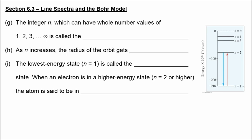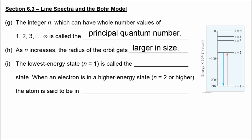The integer N, which can have whole number values of 1, 2, 3, etc., is called the principal quantum number. As N increases, the radius of the orbit gets larger. The lowest energy state, N equals 1, is called the ground state. When an electron is in a higher energy state, it is said to be in an excited state. We're just talking about a hydrogen atom, which has only a single electron.